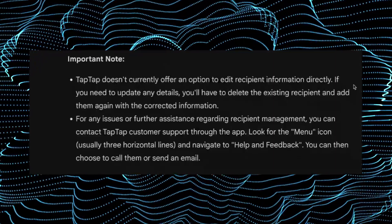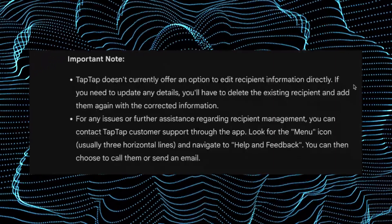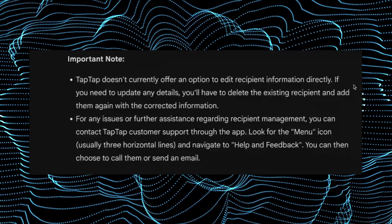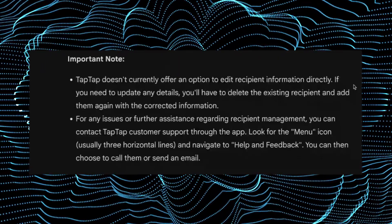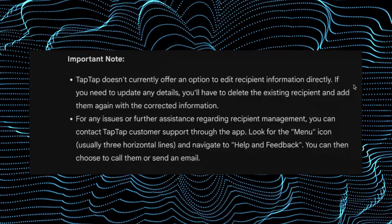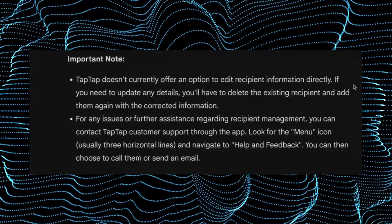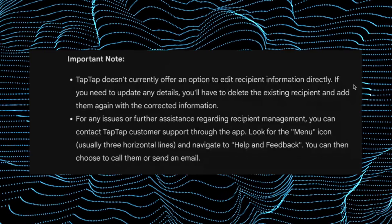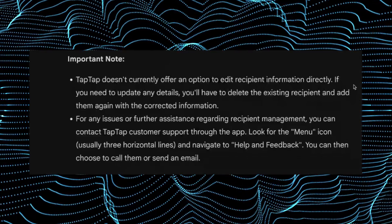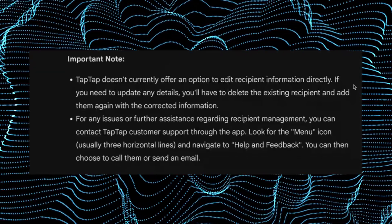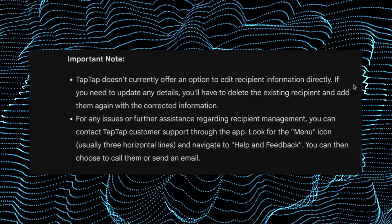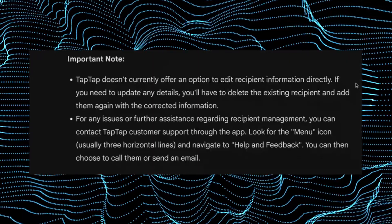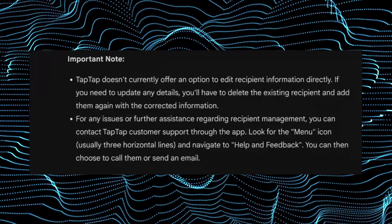For any issues or further assistance regarding recipient management, you can contact TabTabSend customer support through the app. Look for the menu icon, usually three horizontal lines, and navigate to help and feedback. You can then choose to call them or send an email.